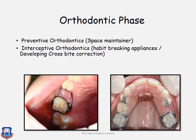The orthodontic phase plays a very important role, especially in children in the mixed dentition phase, because that is when dynamic changes occur in the oral cavity. Preventive orthodontics involves giving space maintainers. Interceptive orthodontics covers habit breaking appliances or correction of developing crossbite. Space maintenance is used to maintain space that may close due to the absence of teeth.